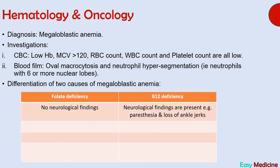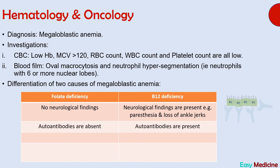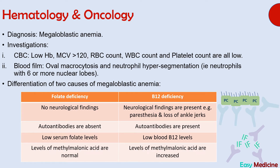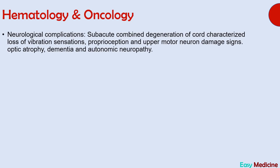The second question asked how to differentiate between the two causes of megaloblastic anemia — folate deficiency and vitamin B12 deficiency. No neurological findings are seen in folate deficiency, while B12 deficiency presents with neurological findings such as paresthesias and loss of ankle jerks. Autoantibodies are absent in folate deficiency but present in B12 deficiency — specifically anti-parietal cell antibodies and anti-intrinsic factor antibodies, with the latter being more diagnostic. Additionally, folate deficiency shows low serum folate while B12 deficiency shows low blood B12. Methylmalonic acid levels are normal in folate deficiency but increased in B12 deficiency.